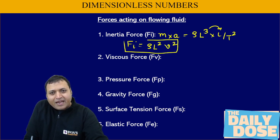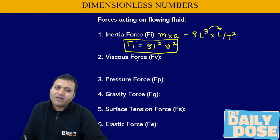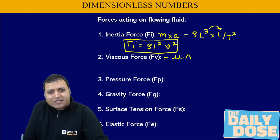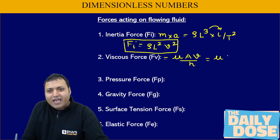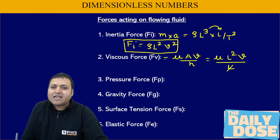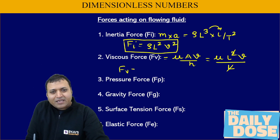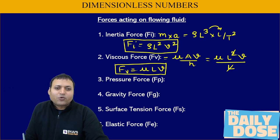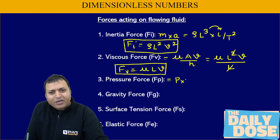This is how we write the inertia force. Then comes the viscous force, calculated by Newton's law of viscosity: mu times A times V divided by H, or mu times L-squared times V divided by L, which gives viscous force equals mu times L times V. Similarly, pressure force is pressure into area, so pressure force equals P times L-squared.